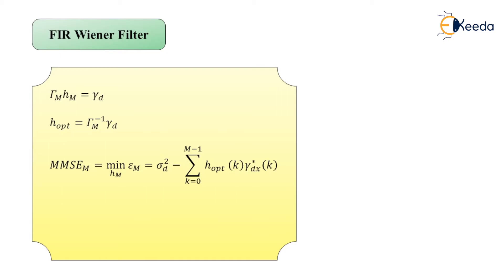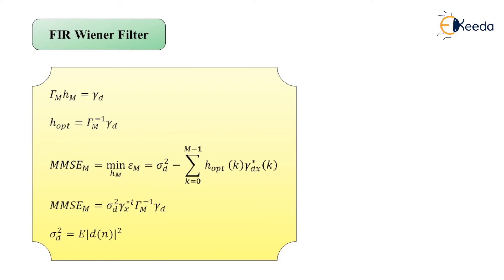An equivalent representation of the MMSE is: MMSE_M = σ_d² − γ_d^H · Γ_M⁻¹ · γ_d, where σ_d² = E[|d(n)|²]. Note: there should be a minus sign between σ_d² and the second term — the plus sign shown is a typographical error.